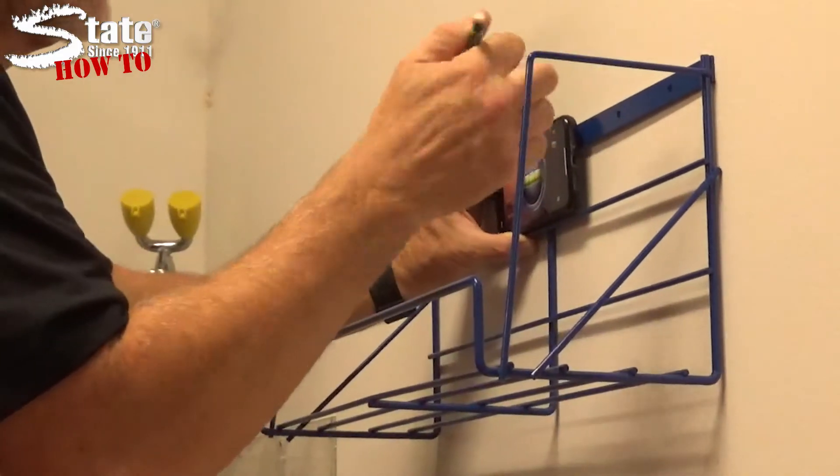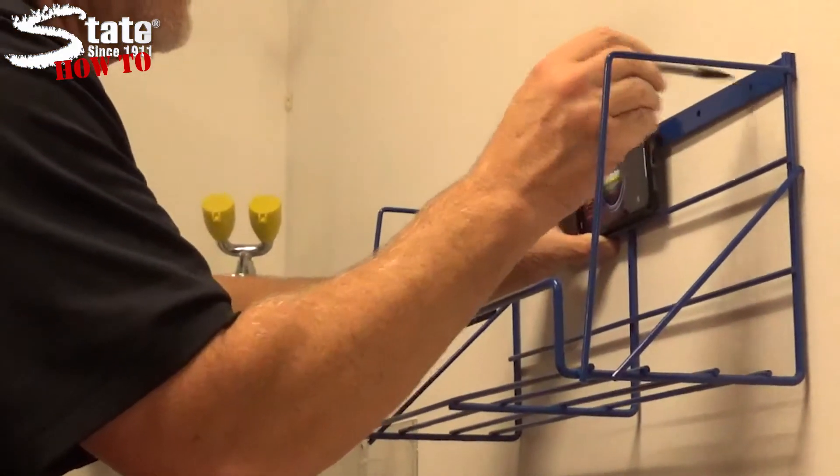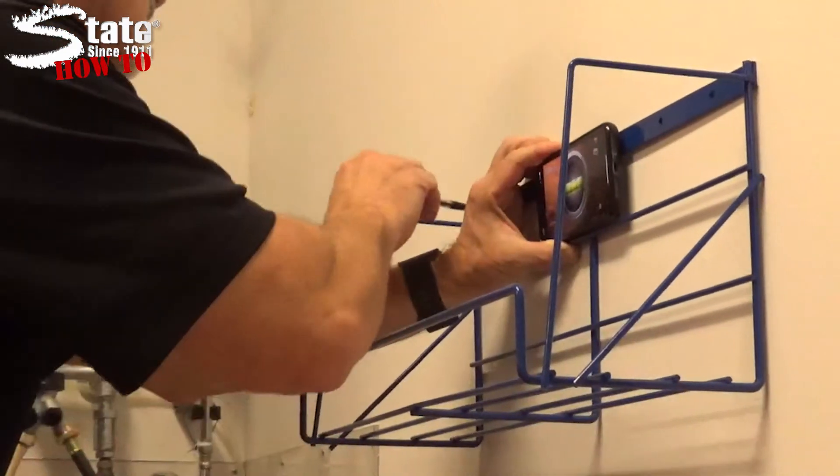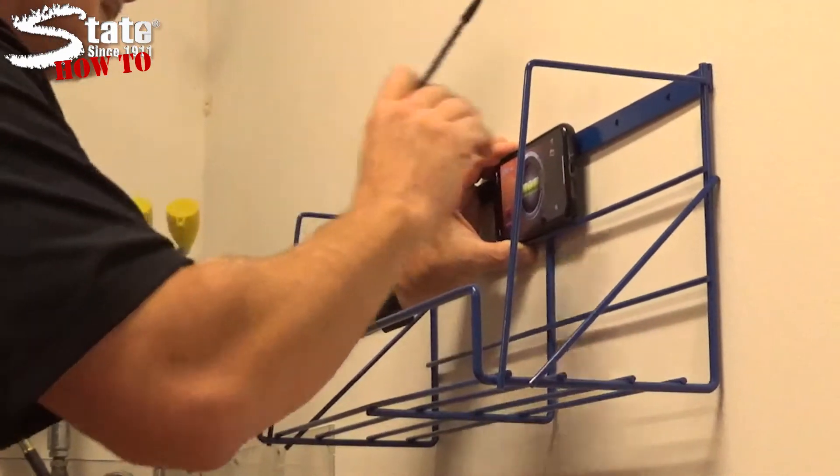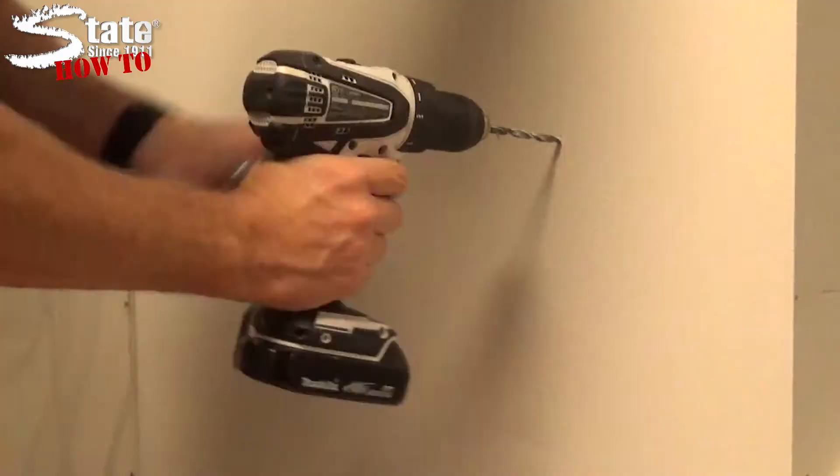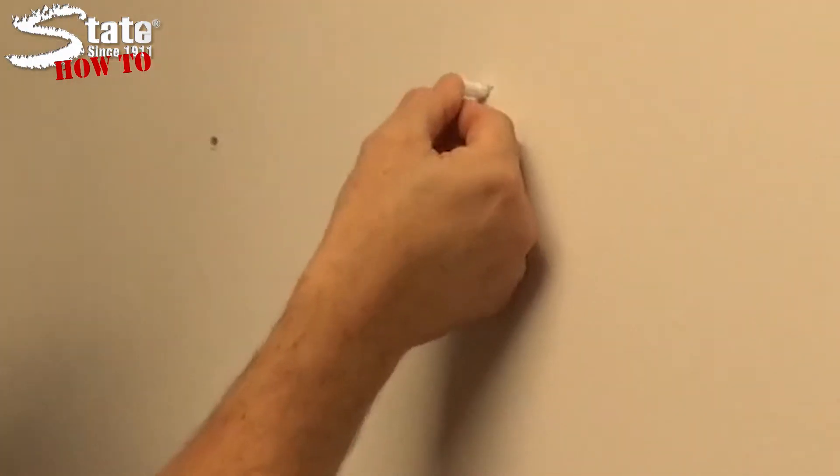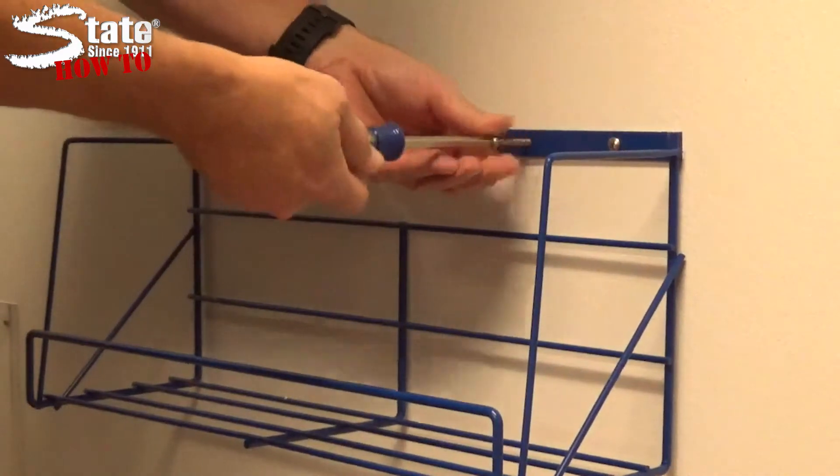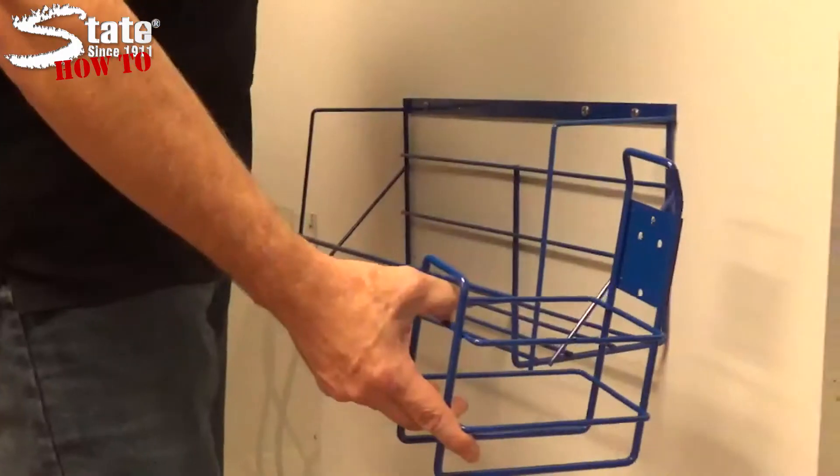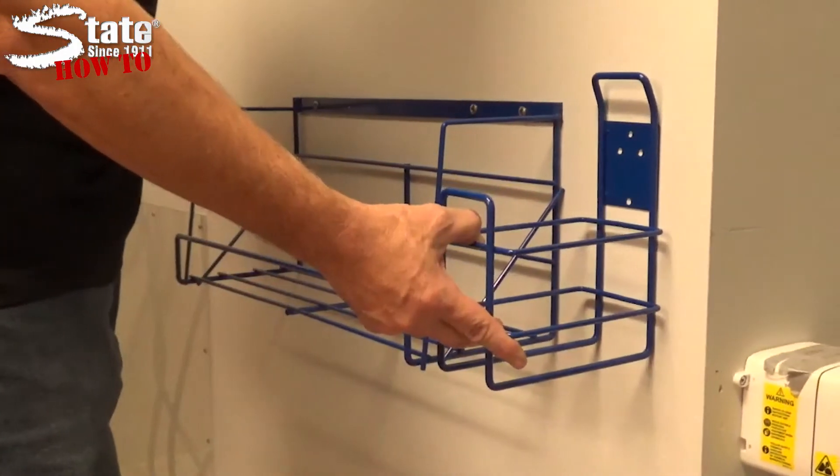Begin by lining up your bottle rack about two feet or more beneath your One Solution system. Confirm that your bottle rack is level and mark your holes. Using your quarter-inch drill bit, drill the holes and insert the anchors. And using your screwdriver, attach your bottle rack using the provided screws. For confined or limited spaces, use single bottle racks.